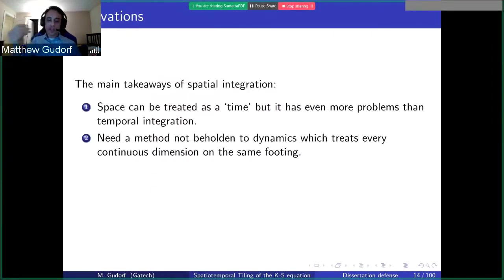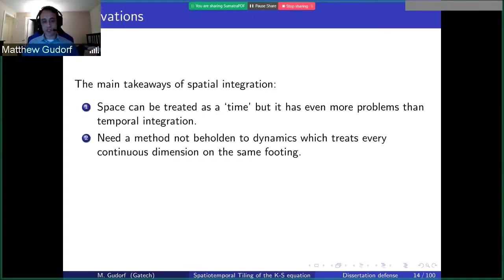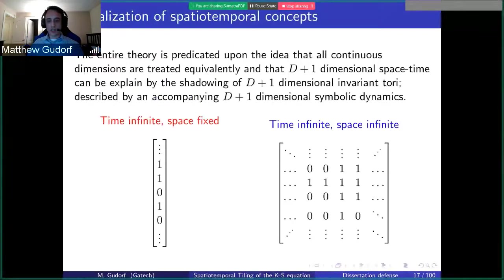We can treat space as time — the continuous dimensions are on the same footing, sort of, except they have different properties. This reinforced the fact that we need something not beholden to exponentially unstable dynamics. To do so, we propose a spatiotemporal formulation which poses the problem as a boundary value problem. In the spatiotemporal formulation, we consider space and time to both be infinite, as opposed to just fixing space as some fixed spatial domain with time infinite.